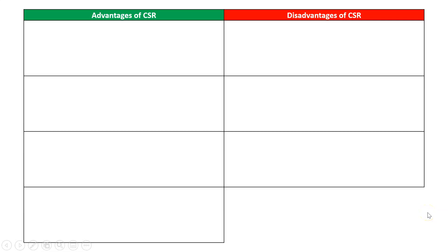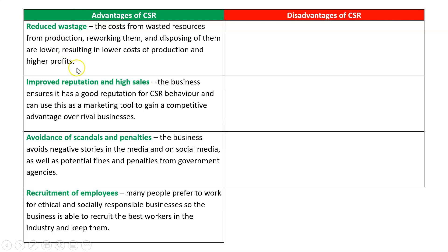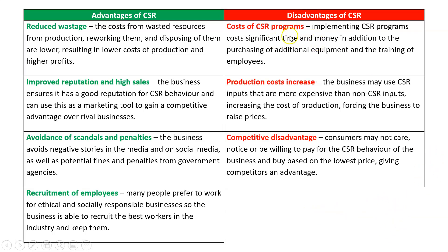We need to finish with some advantages and disadvantages of CSR in operations. Advantages: we reduce waste, which lowers costs; we gain a good reputation that can be used to market our business and gain a competitive advantage; we avoid scandals, penalties, and government fines; and we can recruit employees, since workers generally want to work for ethical and socially responsible businesses. However, there are downsides. The cost of the operation system will go up because implementing CSR programs costs money, and inputs are usually more expensive — non-CSR inputs with bad chemicals are typically cheaper. Lastly, there's a risk of competitive disadvantage if customers don't care or aren't willing to pay more for ethical business practices and simply buy the cheapest option.